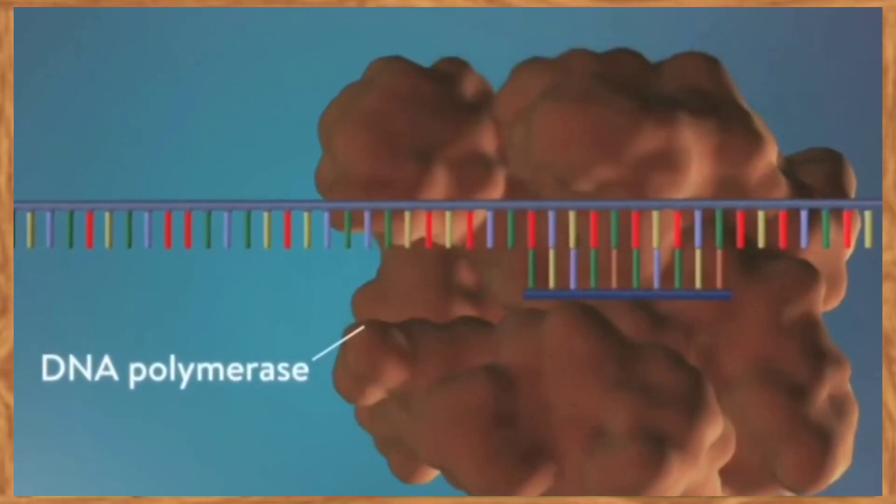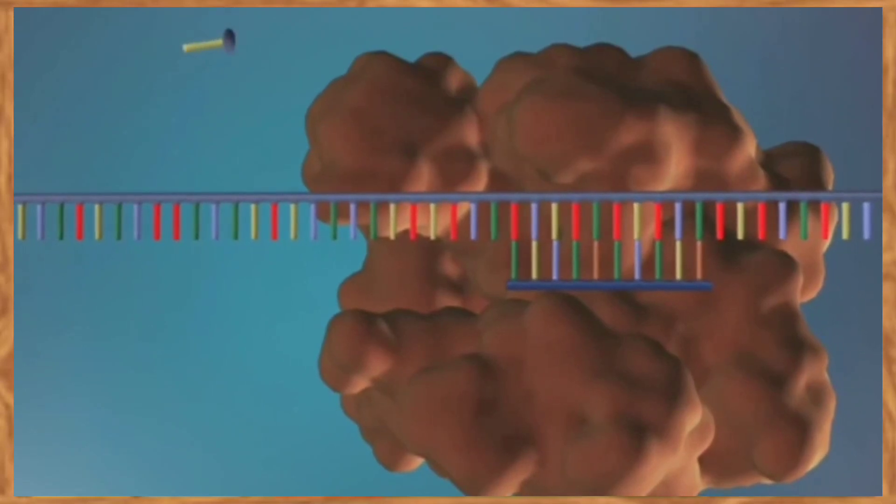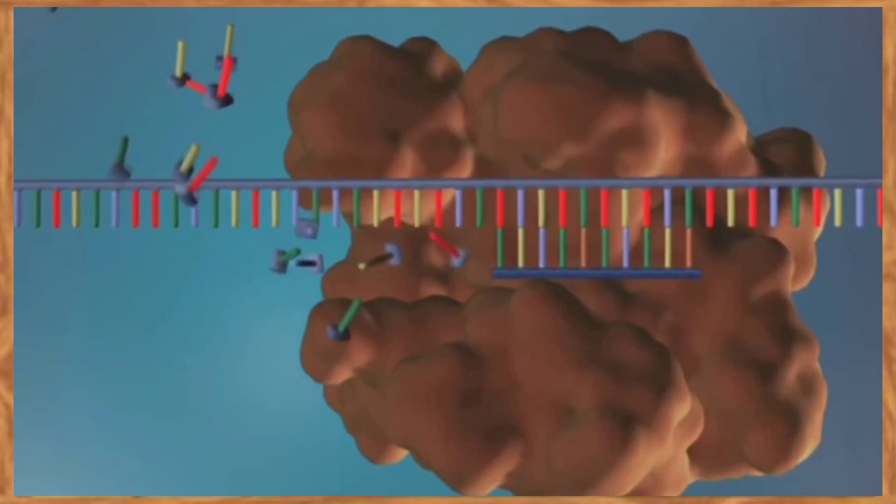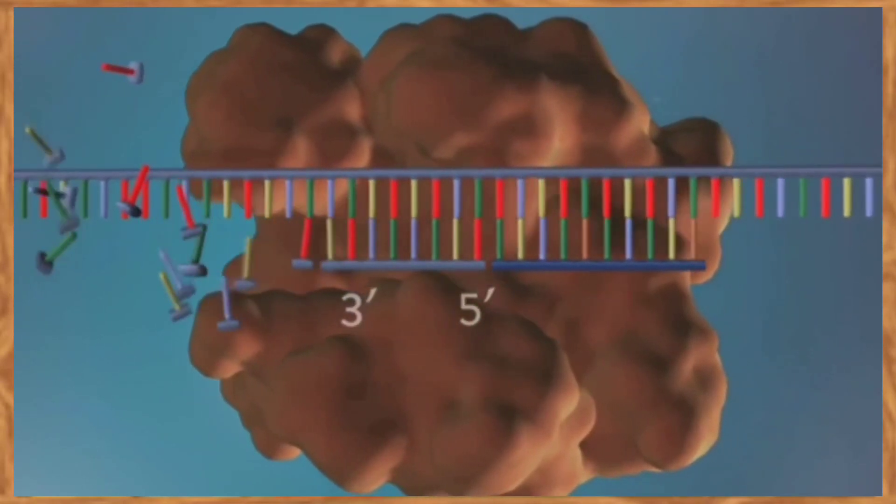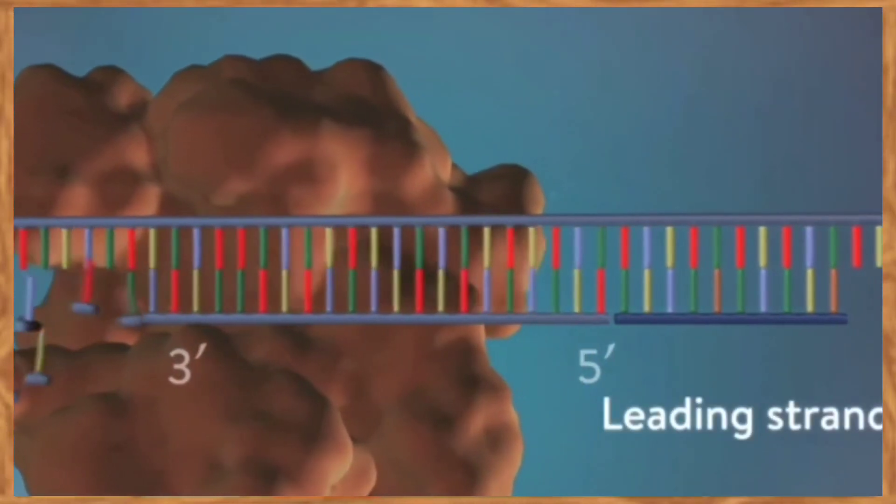DNA polymerase can only add DNA bases in one direction from the 5' end to the 3' end. One of the new strands of DNA, the leading strand, is made continuously. The DNA polymerase adding bases one by one in the 5' to 3' direction.